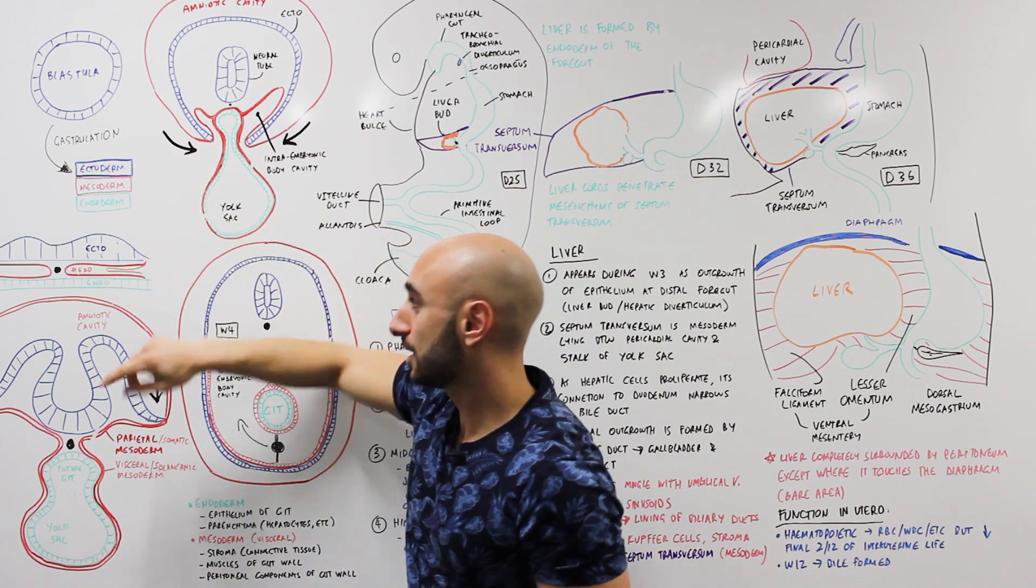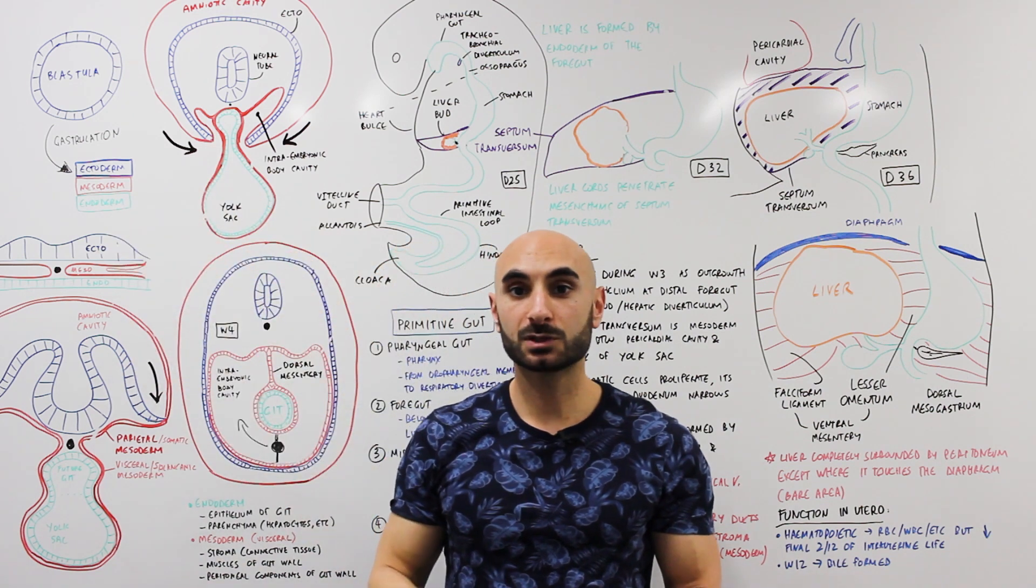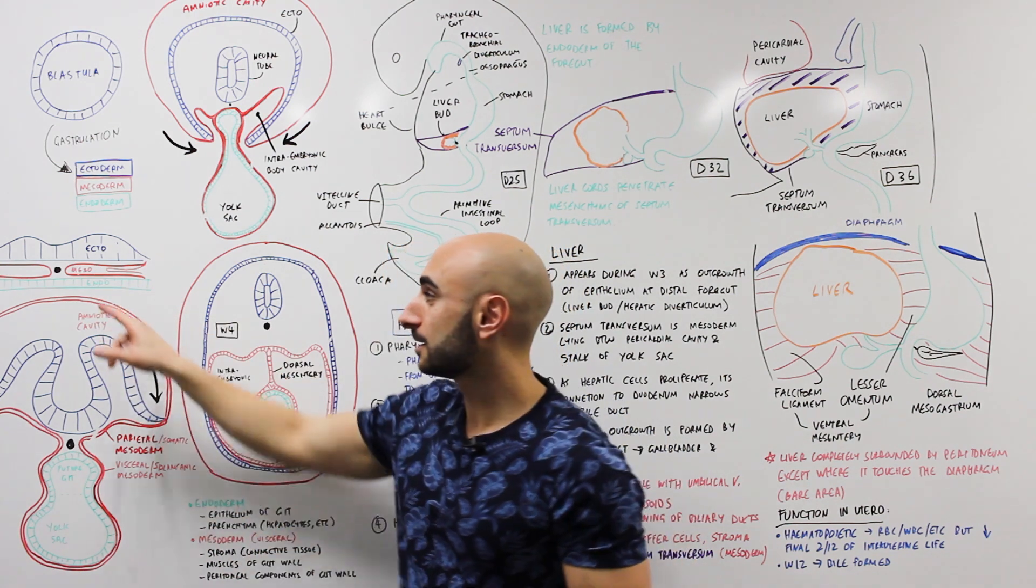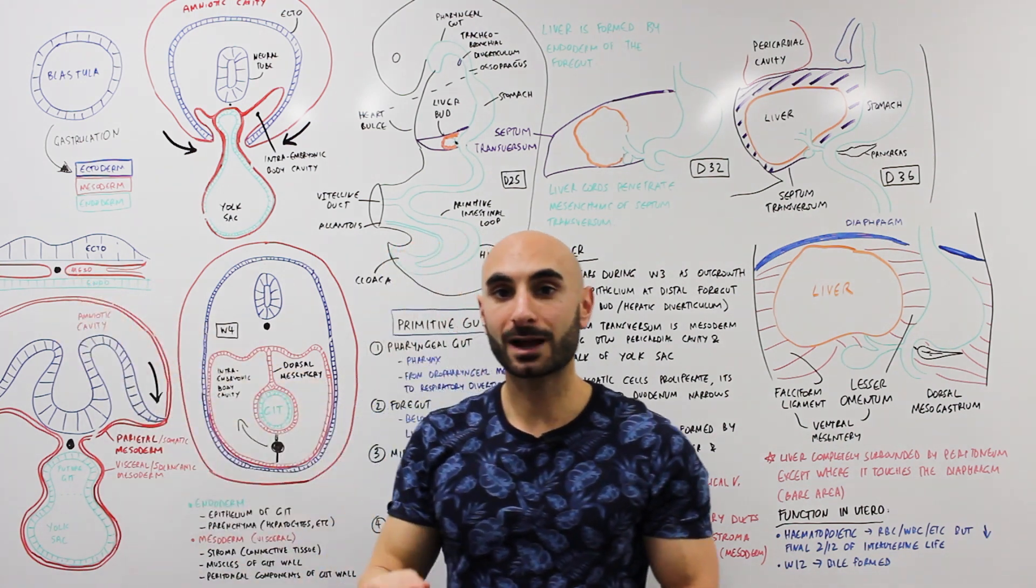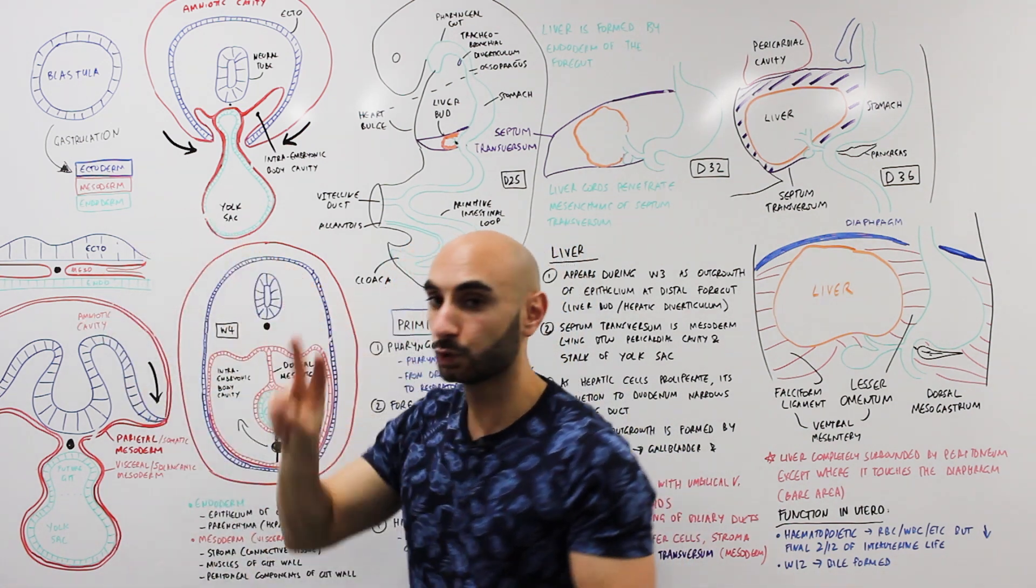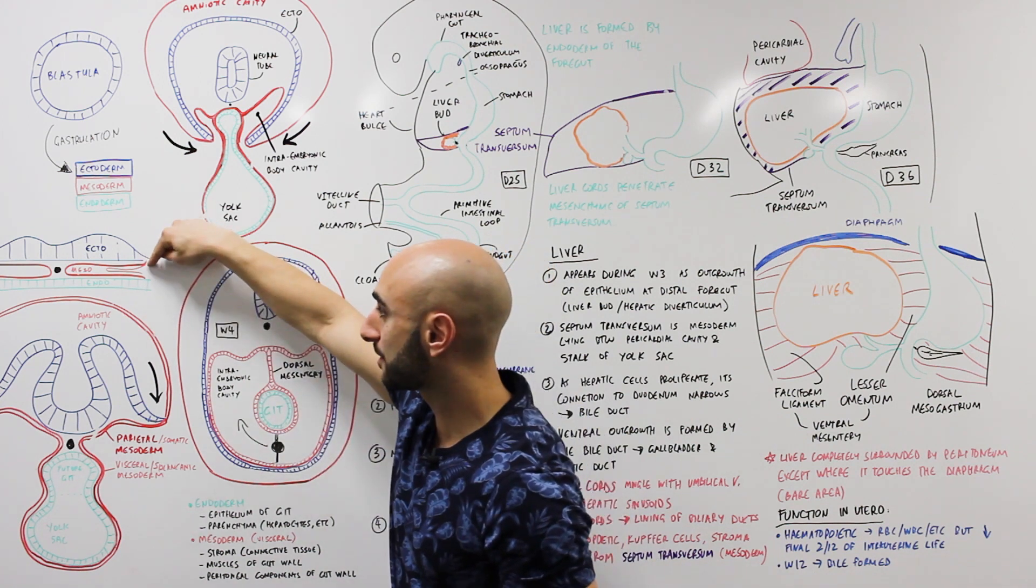This is a simplification where we have the ectoderm which will become your central nervous system and skin, the mesoderm which has three parts: the paraxial mesoderm (somites, muscles), intermediate mesoderm (gonads, kidneys), and we have two lateral plates: a somatic lateral plate and a splanchnic lateral plate.